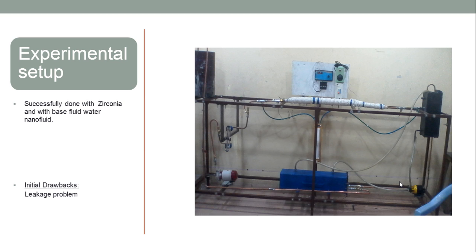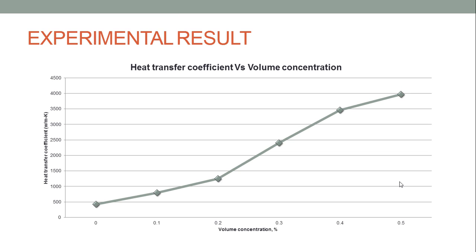This is the experimental setup. The shell and tube heat exchanger is shown here, and the setup was completed successfully using zirconia and water, with water flowing through it and zirconia as the nanoparticle. The only drawback encountered was a leakage problem. The experimental results show a linear increment in heat transfer coefficient against volume concentration.